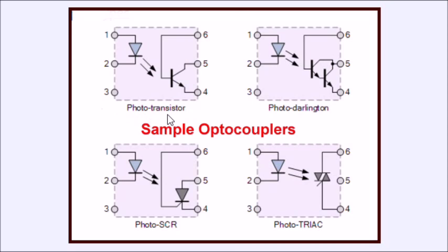For example, the photo transistor types can be used for input or output circuits, as well as if you have photo SCR or photo TRIAC. Those are almost always used exclusively for output circuits. So our main focus here is going to be the transistor photo couplers.